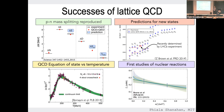It's not just spectroscopy and structure. Many basic properties of high-temperature QCD have now been computed. Here we have the interaction measure — the deviation from a free gas — and this peak is a manifestation of the deconfinement transition. We are even now dipping our toes into nuclear physics.